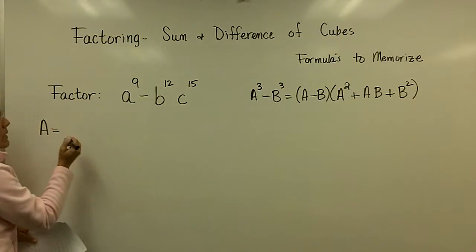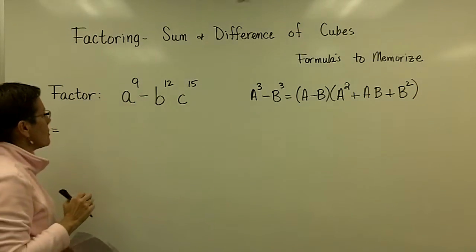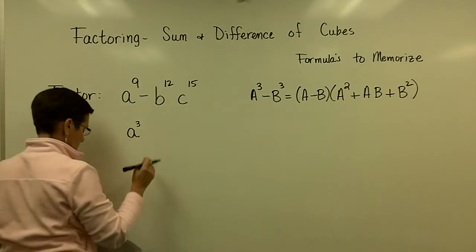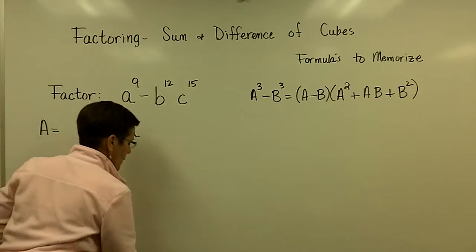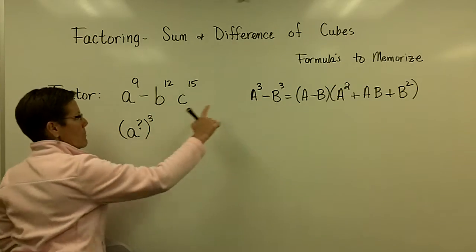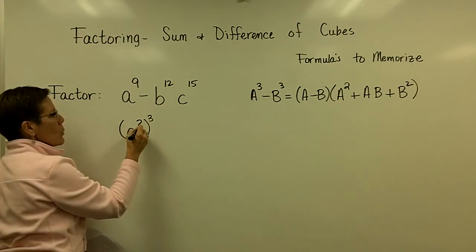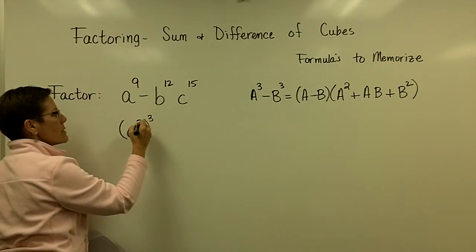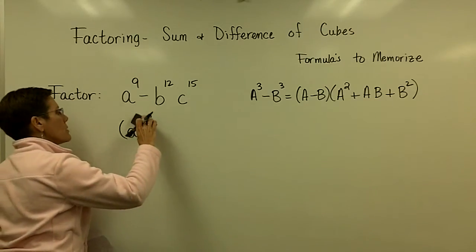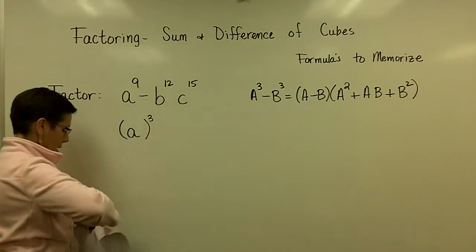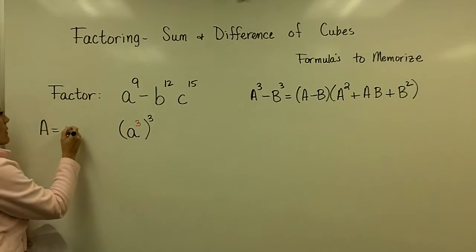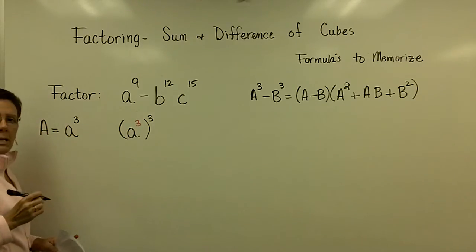If I want to know my A value to put into this formula, I have to ask: A to what power, when I cube it, will give me A to the 9th? When raising a power to a power, the shortcut is to multiply. What number multiplies by 3 to be 9? I need a 3 right there. A to the third raised to the third is A to the ninth. So my capital A value in this problem is A cubed.